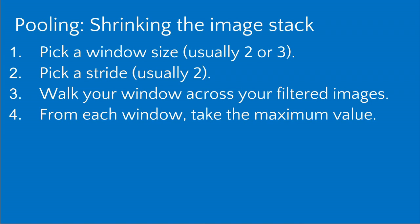Another piece of this is called pooling. We took our original image and now have a stack of images. This step shrinks them down a little bit. We start by picking a window size — usually two or three pixels — picking a stride, usually two pixels, which has been shown to work well, and then walking this window across the filtered images and taking the maximum value seen in each window. This is called max pooling.